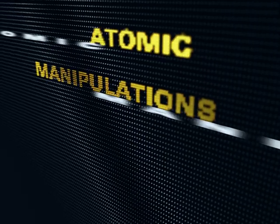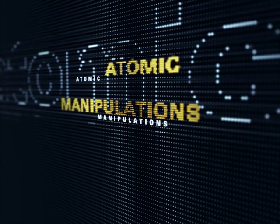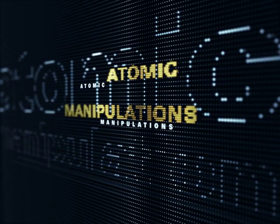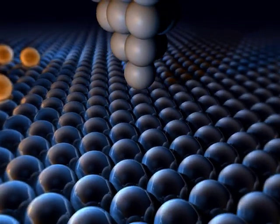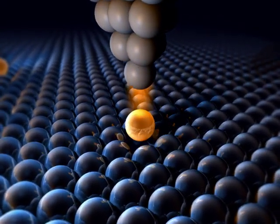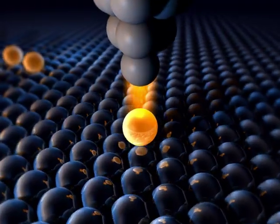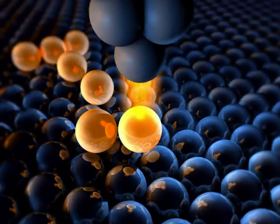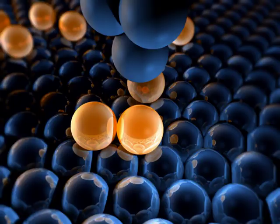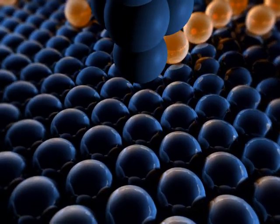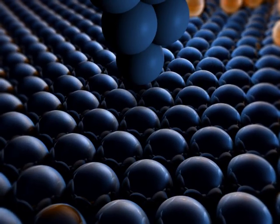Atomic manipulations. The scanning tunneling microscope is also a unique tool to create atomic structures on the nanoscale. The atom can be transferred to the tip and transported along the surface, moved with the tip to another position.